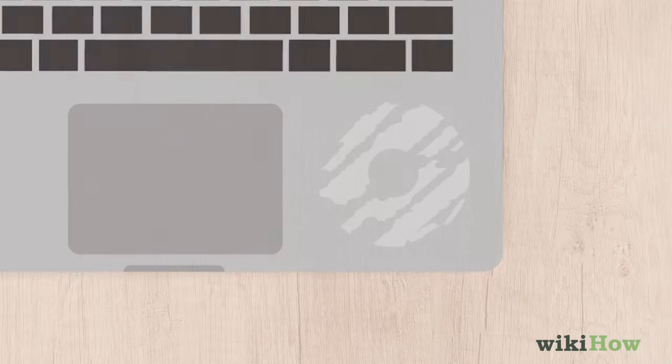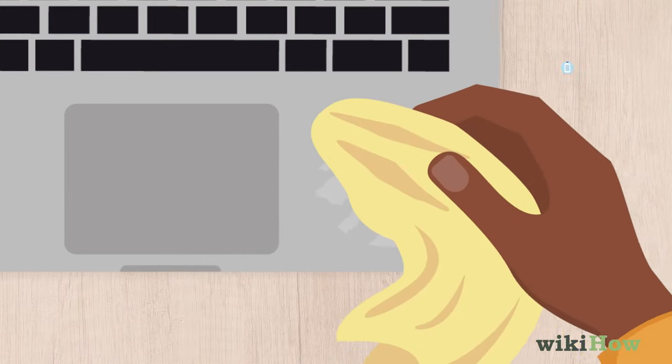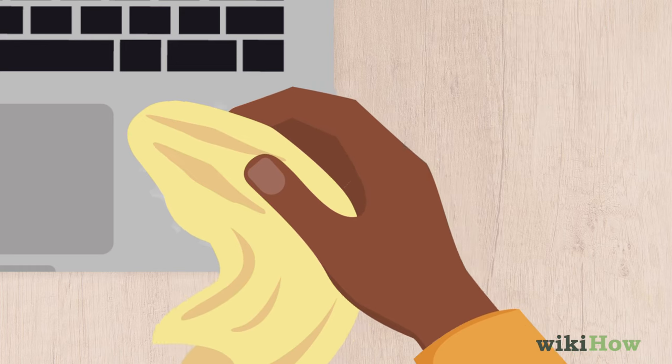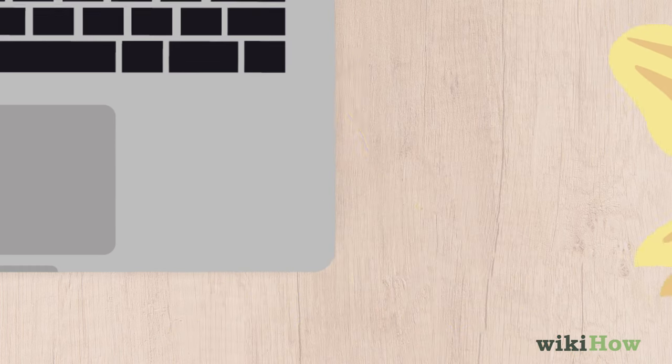For extra stubborn residue, hold a cloth dampened with rubbing alcohol over the area for two to three minutes. When you're done, you may be able to simply wipe the dissolved glue away.